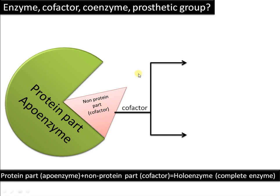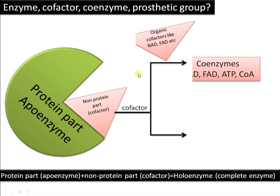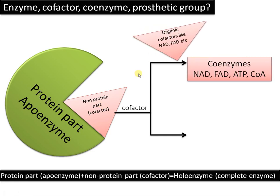Organic cofactors such as NAD, FAD, ATP, etc. are called coenzymes. For example, NAD acts as a coenzyme in lactate dehydrogenase. These cofactors may be loosely or tightly bound to the protein part.